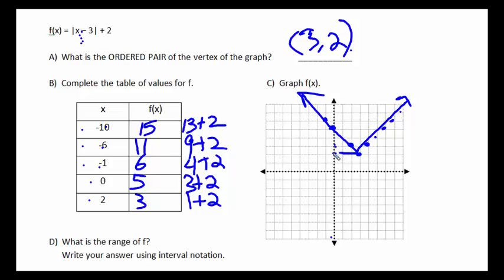That is a y value of 2, and it's included. So I'm going to put a bracket on the 2, and then everything above that exists on the graph. You go up to infinity from there, but we never include infinity, so that'll get a parenthesis, and that describes the range.